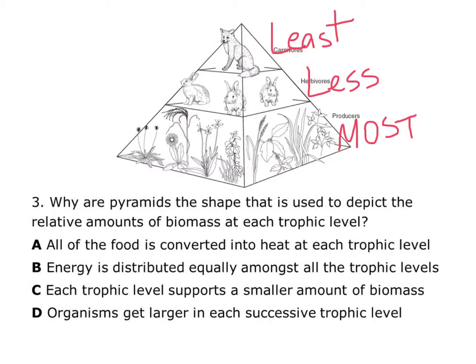Answer A says all of the food is converted into heat at each trophic level. This is not correct because of that word 'all' — all of the food is not converted into heat. Remember, 10 percent of the energy does go on to the next trophic level and is used to make new molecules, tissues, and cells, while 90 percent is converted into heat. But that's still not all, so A is not correct.